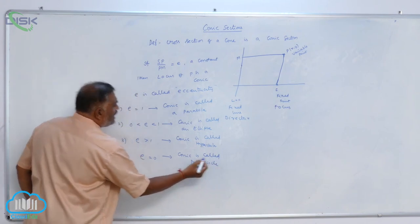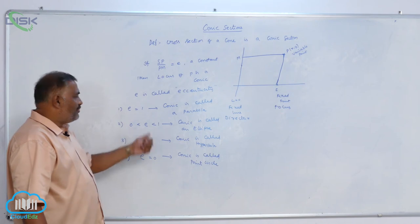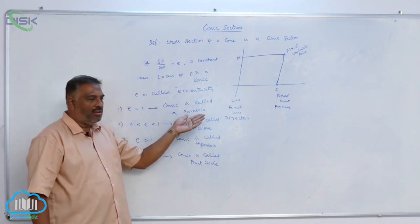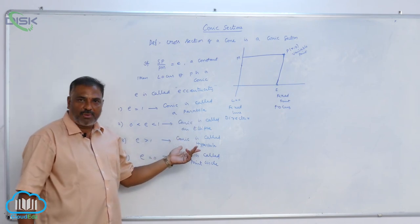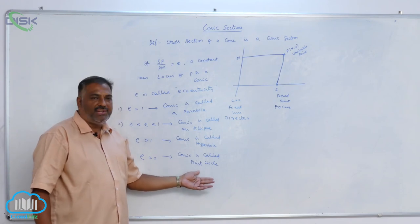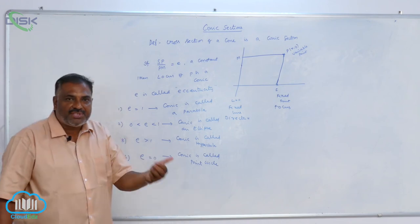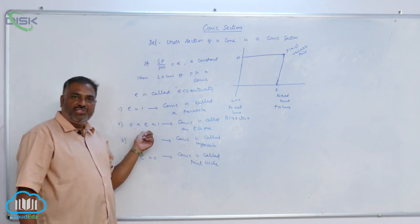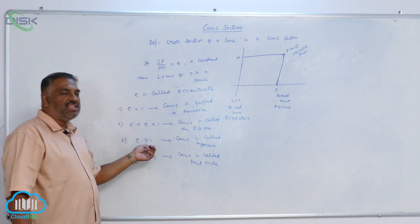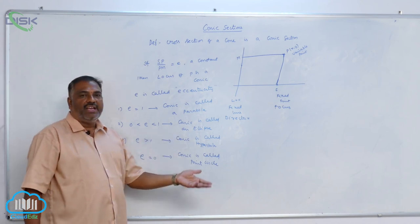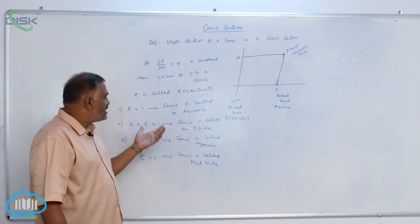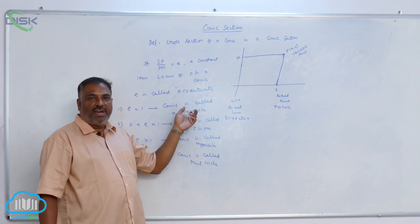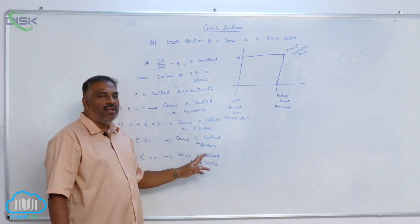So, it all depends upon the value E. It can be a parabola or ellipse or hyperbola or point circle. In the subsequent chapters, we discuss E equals 1, E lies between 0 and 1, and E greater than 1. That means, in coming days, we are discussing the topics parabola, ellipse and hyperbola.